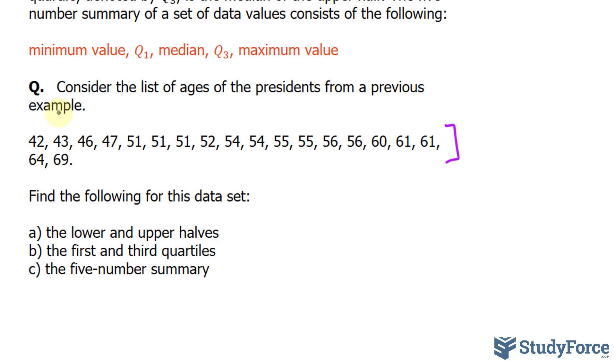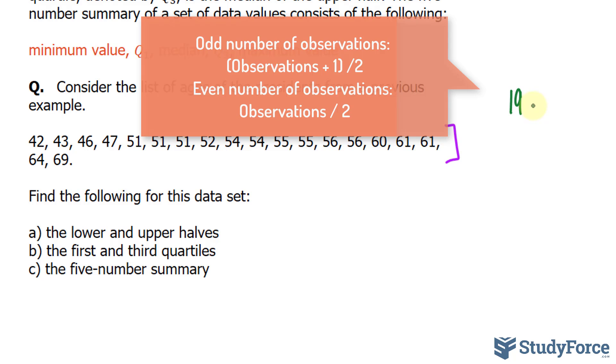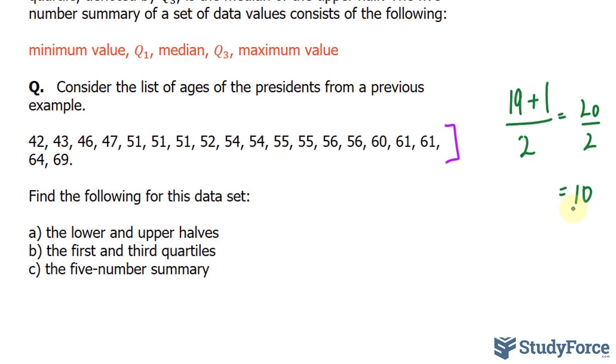We have 42 as the lowest value and 69 as the largest value. And the data consists of 19 observations. So the midway point will be 19 plus 1 divided by 2. That's equal to 20 over 2, 10.